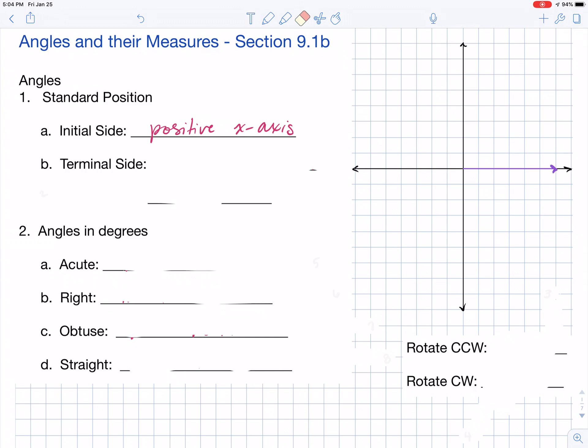The terminal side is what you're going to get when you rotate that initial side, and wherever you stop will be the terminal side. So if I were to maybe rotate in a counterclockwise direction, wherever I stop, this is going to be where my terminal side occurs.